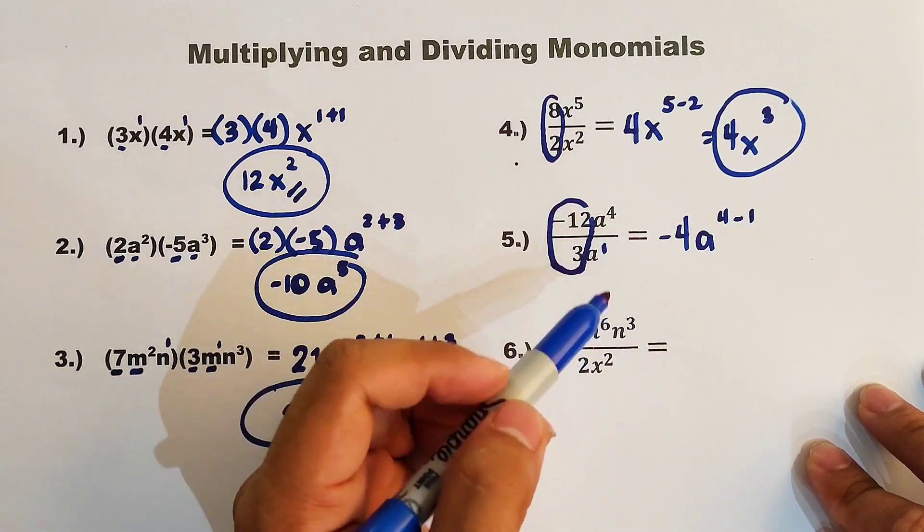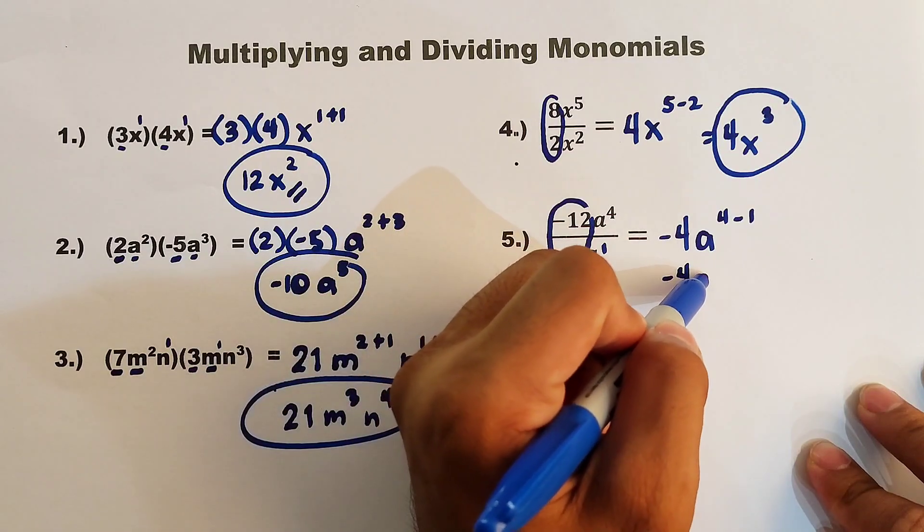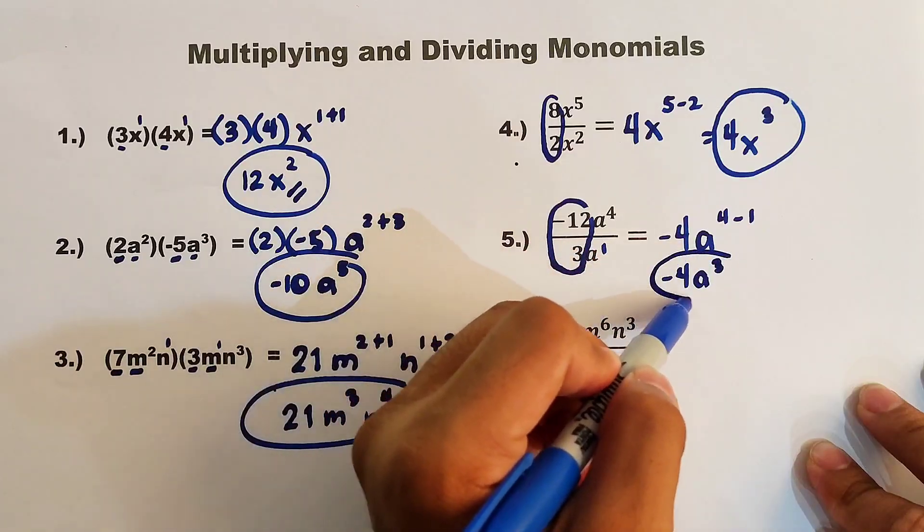Now, to simplify, our answer here is negative 4, a raised to the third power. This is the answer.